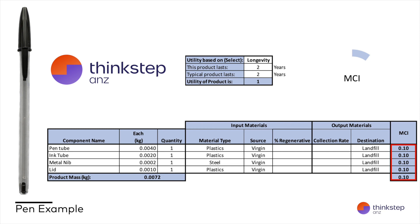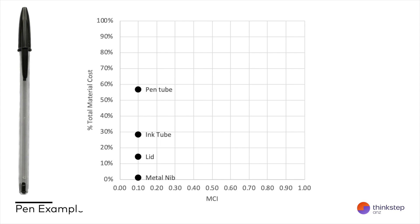We will now use the calculator to explore a few possible scenarios. Let's look at economics first because this is a possible motivation to explore circular models for this product. Looking at where we may be losing value from our linear model, we're most concerned about the pen tube, as this comprises around 55% of the overall material value of the pen.